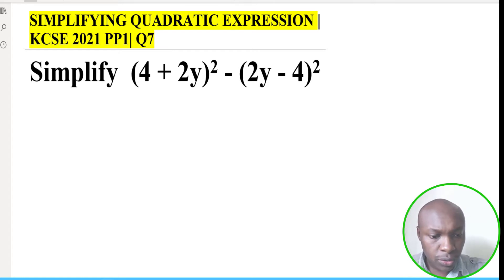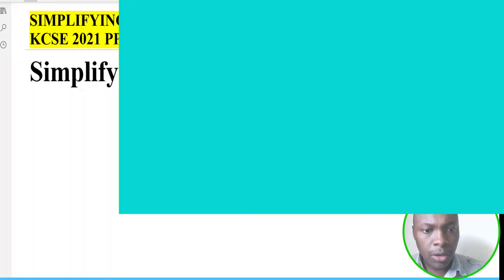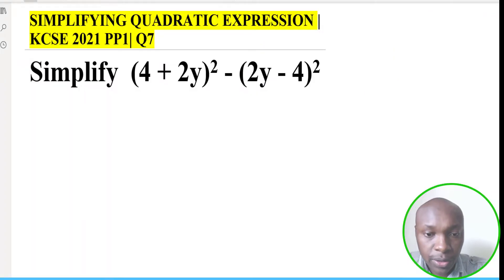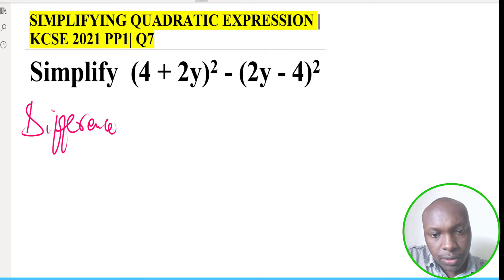Let's go straight to the solution. Now when you look at this expression, it is involving a difference of two squares. So that is the first thing you're supposed to note, that it is involving a difference of two squares.